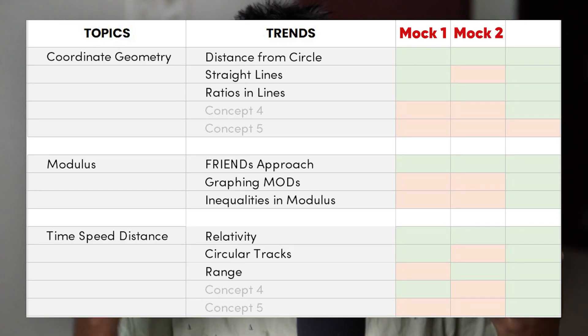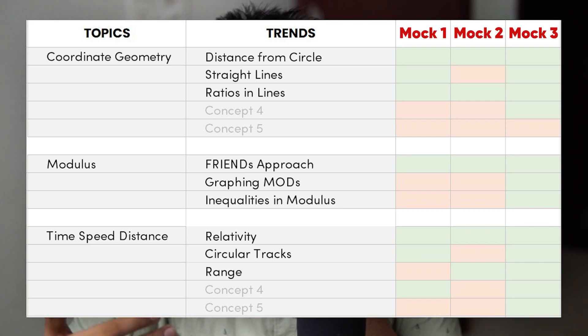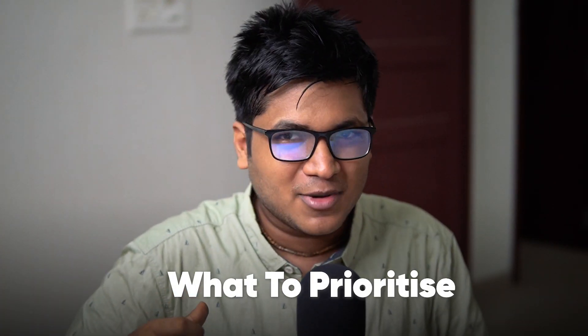Similarly, you can also analyze your mock preparation — are you able to solve questions from a particular topic? Mark it green or red. With this you can make a trend of your own mistakes, and with that information you will know what to prioritize, because some people might be weak on algebra and some might be weak in arithmetic. This is very personalized and requires a lot of context — only you will know what you need to focus on the most. We are going to make mistakes in mocks, but that's the point. Only by making mistakes in mocks are we going to fix them so we don't commit the same mistakes again. It allows us to find the gaps in our learning and fill them in.